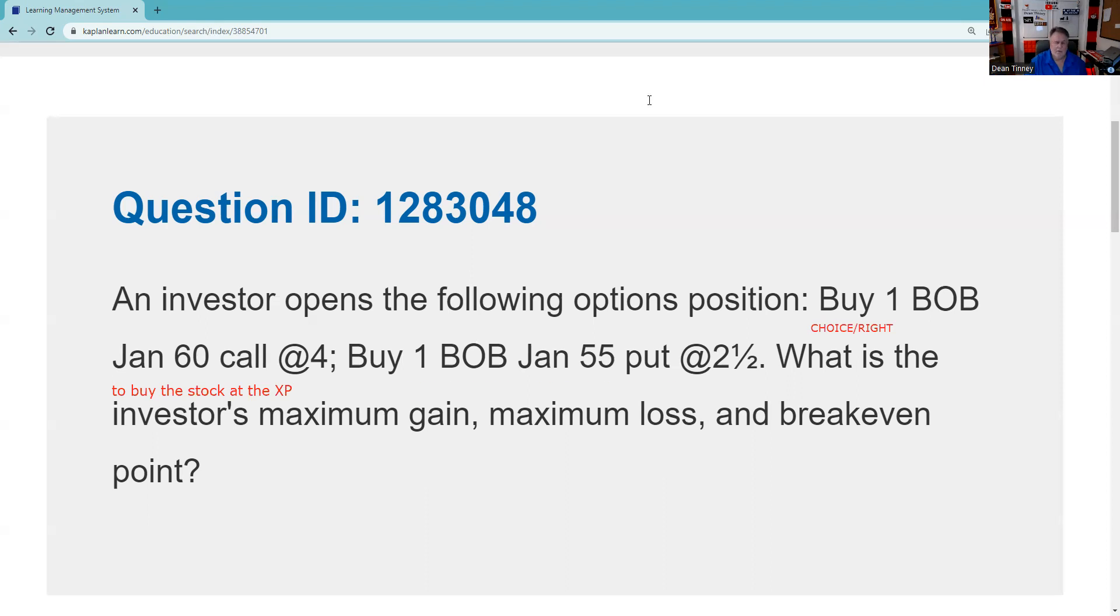And I buy one BOB January 55 put at two and a half. And that is a choice to sell the stock at the strike price. If you're not struggling with contract specifications, and you can track money, you're in pretty good shape.